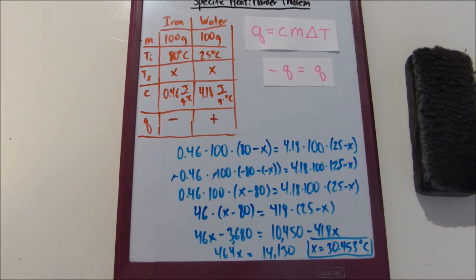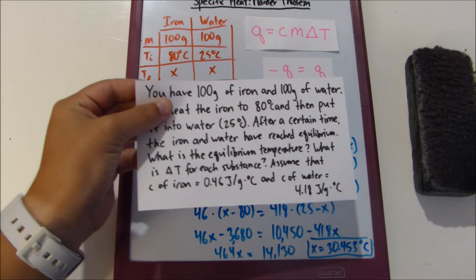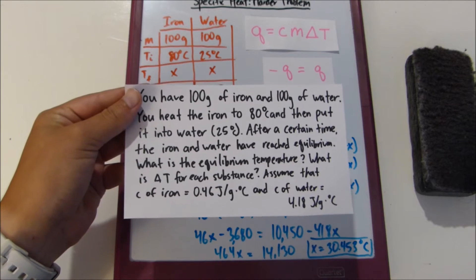It's also temperature final for both iron and water. Do you see how that works? But then it also asks us to find delta T for each substance.